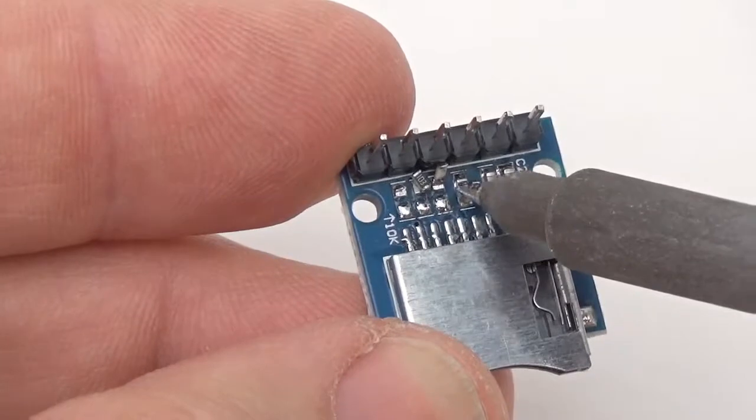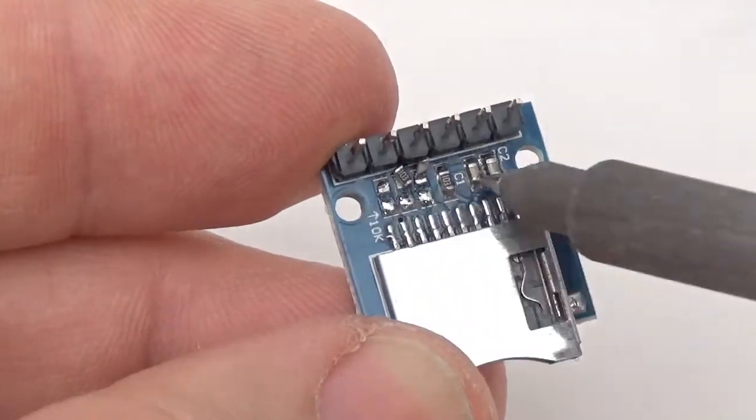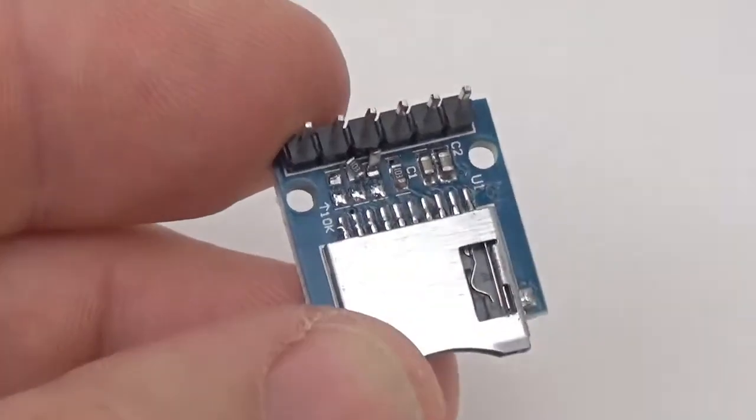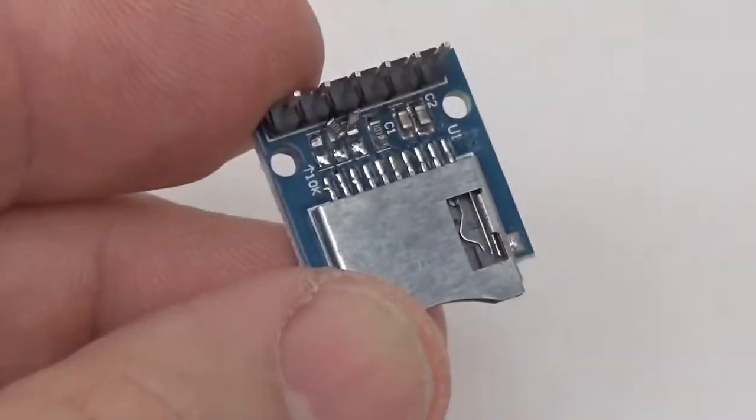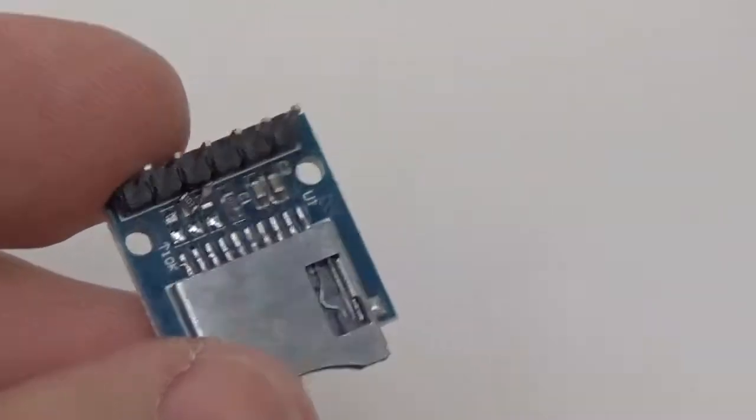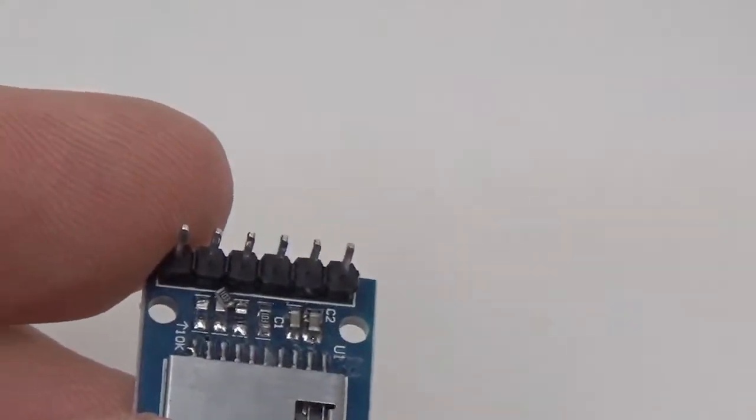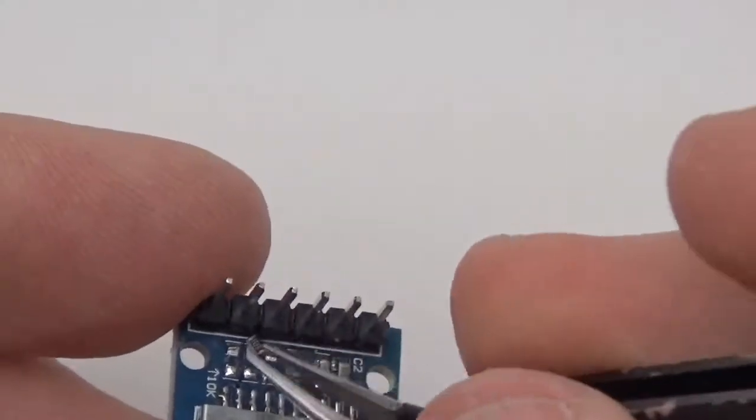Don't remove the fourth resistor in the row. That one is to pull up the unused connections on the SD card, which is pretty important because if those connections are not pulled up, they'll draw excessive current as well.